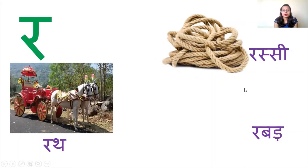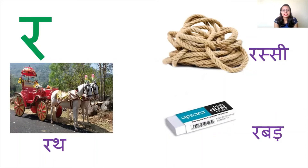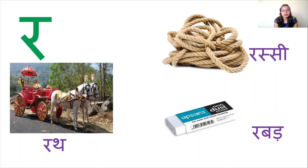Next is ra se 'rassi'. You have seen these types of ropes — rassi is the Hindi word for rope. Next is ra se 'rubber'. Rubber means eraser. When you write with a pencil and want to remove something written wrong, you erase it. In Hindi we don't call it eraser, we call it rubber. Rubber is used to rub something. Let's revise: ra se rath means chariot, ra se rassi means rope, ra se rubber means eraser.